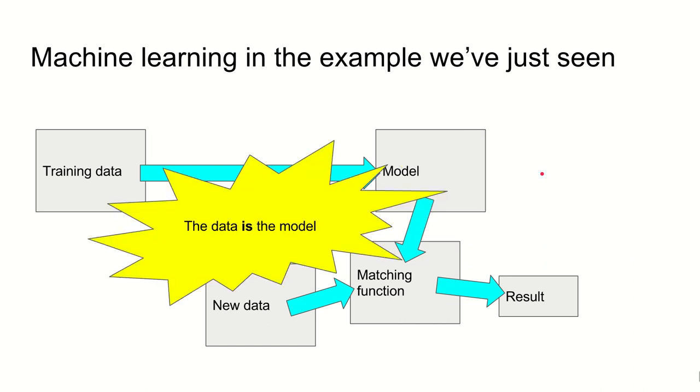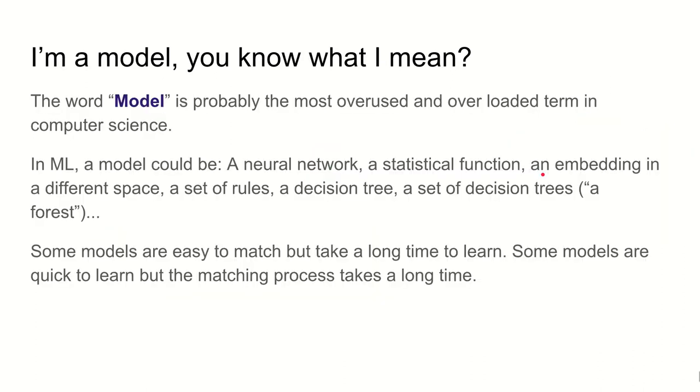When you're doing machine learning, there's a real trade-off between models that are slow to learn but very quick to match, and models that are very quick to learn and that are very slow to match. So the word model is probably the most overloaded term in computer science. In machine learning, it could be a neural network. It could be a set of data, as we've just seen. It could be some kind of statistical function based upon the data that you've learned. It could be a kind of embedding in a different space.